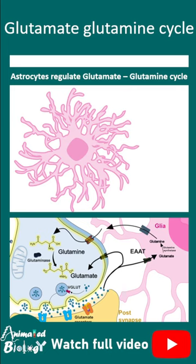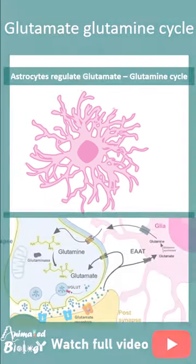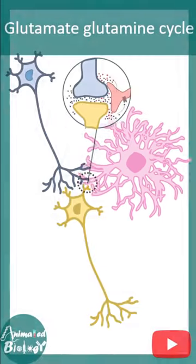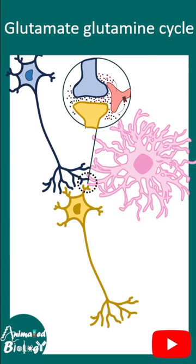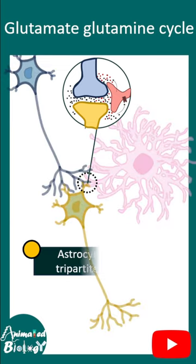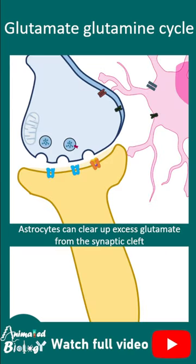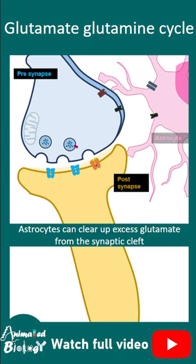Let's talk about the astrocytic glutamate-glutamine cycle. Astrocytes take part in the formation of the tripartite synapse. If we zoom into our tripartite synapse, we can see the presynaptic terminal, postsynaptic terminal, and astrocyte.